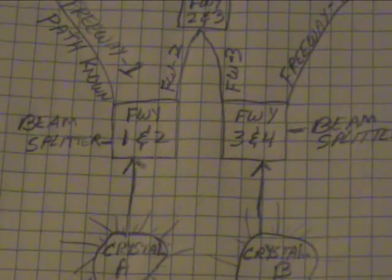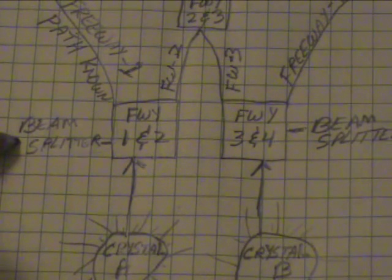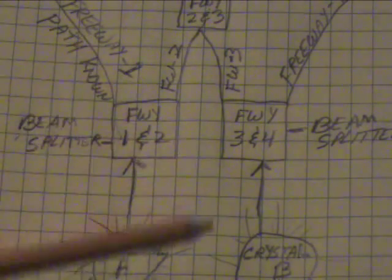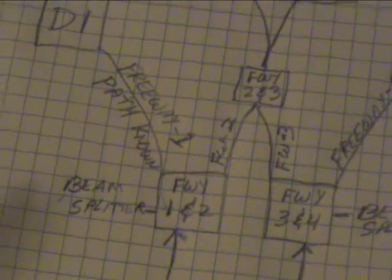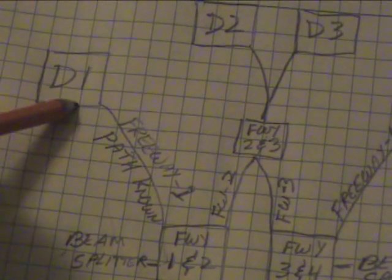The splitter gives you a choice. The beam splitter is telling you to either go to freeway 1, which is over here, and if you take freeway 1, you are going to hit detector 1.